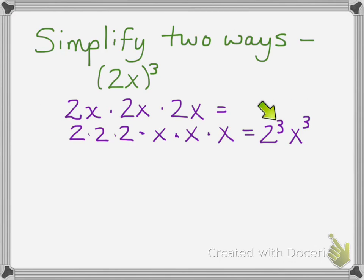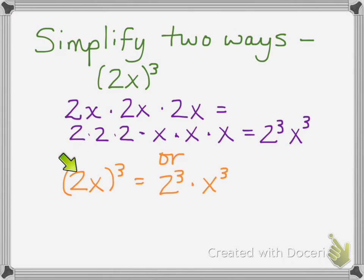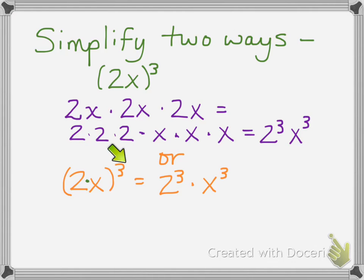The other way I could think of this problem is to think of 2x as a product of 2 times x. I could even put a multiplication sign in there: 2 times x, cubed. We could use the product rule — because 2 times x to the third power, that product rule says I take each of the factors inside the parentheses and raise it to the exponent independently. So I can go directly to 2 to the third power times x to the third power.